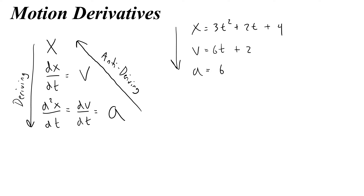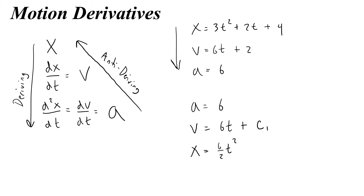The antideriving process is a little bit different. Let's say I started with acceleration equals 6 and I antiderived. When you antiderive, you always have to add a constant of integration. And if I antiderive again, I would need to call this first constant of integration c1, and raise t to a power — so the 6 divided by 2 gives 3t squared.